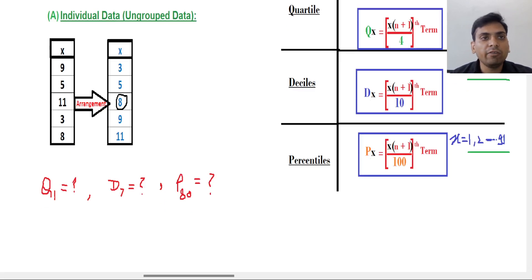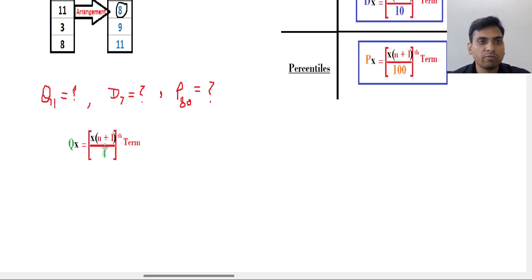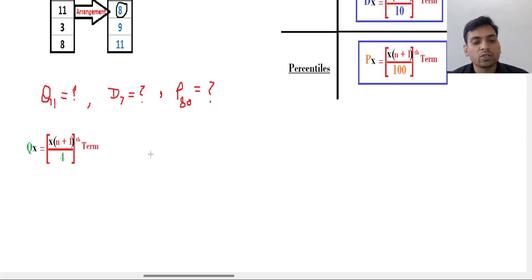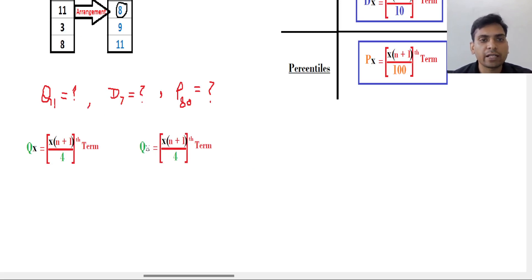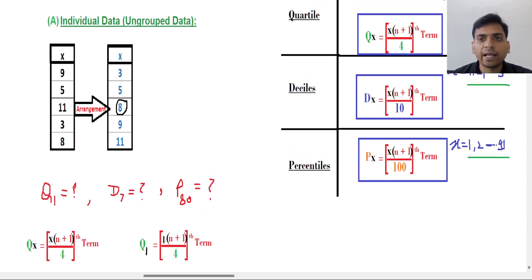First focus is on quartile. The formula for quartile is Q_x = x(n+1)/4 th term. Now we need to find the first quartile, so we will put x = 1. I am replacing x by 1 to find the first quartile. Always the first task to find quartile, decile, or percentile is the arrangement of data in ascending order.